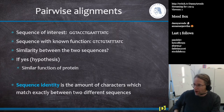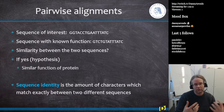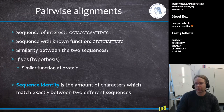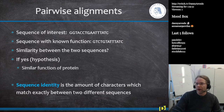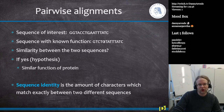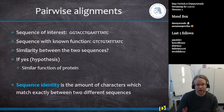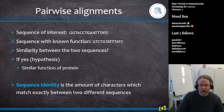A pairwise alignment is when I have two sequences and I want to align them together to know how they are similar or different. If I have a sequence of interest and a sequence with a known function, what is the similarity between them? The hypothesis is that if these sequences are similar, we can infer that there might be a similar function of the protein or microRNA being produced.